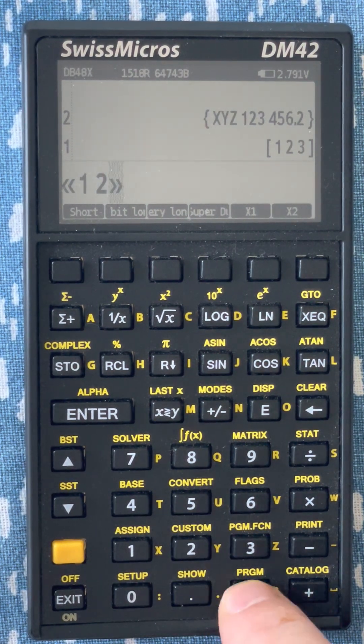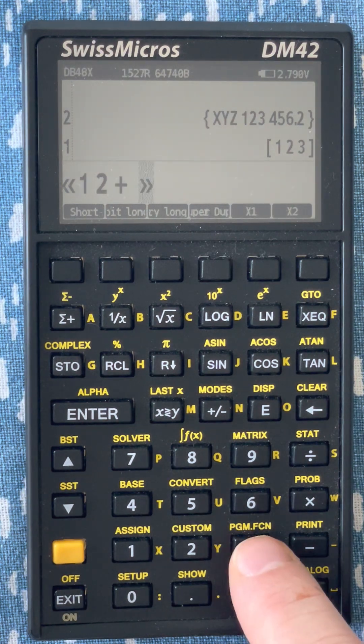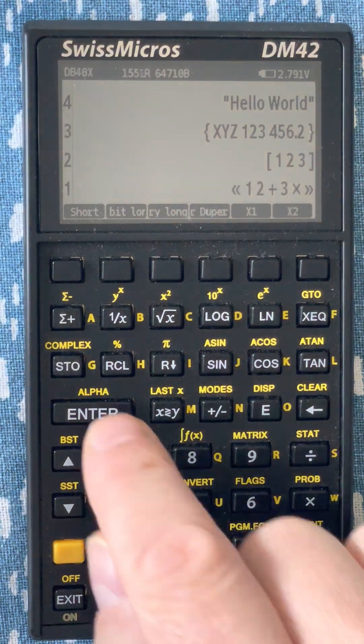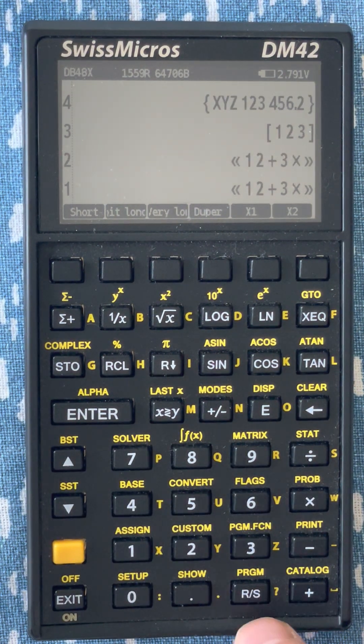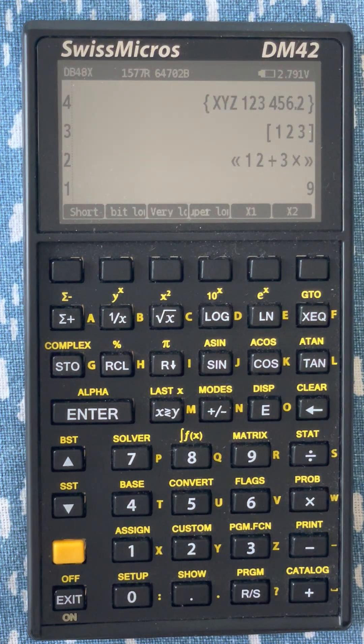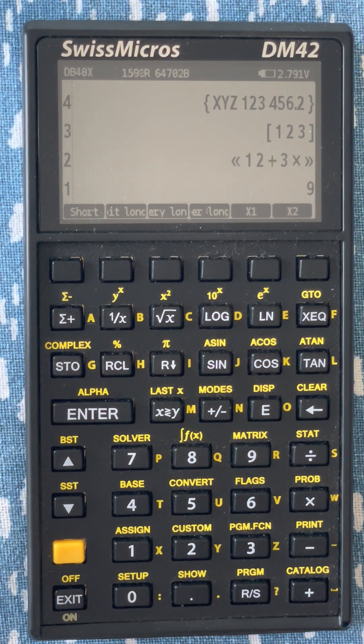So I can do one, two, plus, three times. Put that on the stack. And now if I evaluate that, so RS is mapped to eval. If I evaluate that, I got my program results.